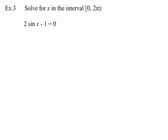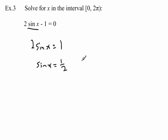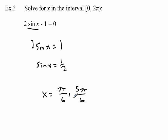We're working in radians now. The equation is more complex — notice sine of x is not by itself. We need to isolate sine of x, so first add 1 to both sides, then divide both sides by 2. Now we can look at the unit circle and ask: where is the y-coordinate equal to 1/2? That happens at x = π/6 and at x = 5π/6. Those are your two solutions.